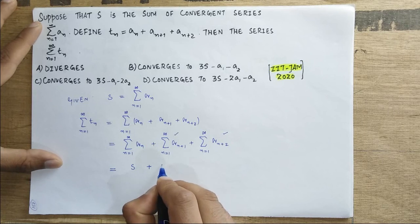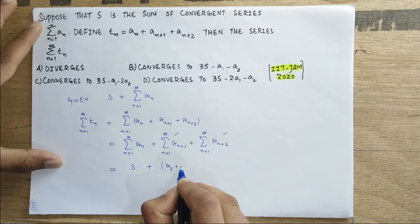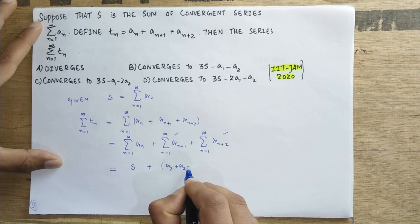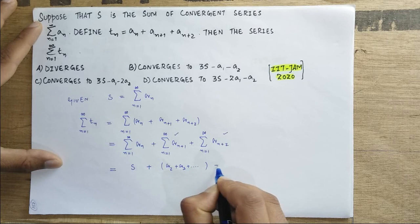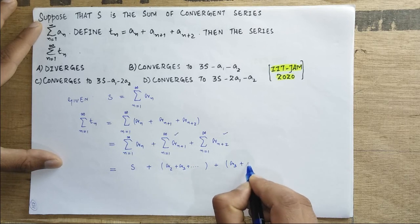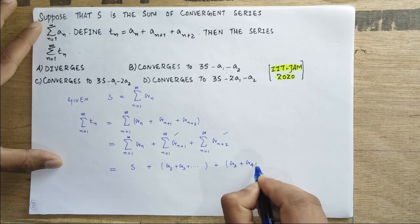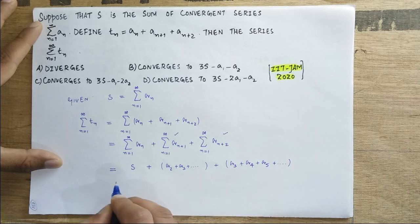Now I will write this for you. You can see it is a_2, a_3, plus so on. This series is a_3, a_4, a_5, plus so on.